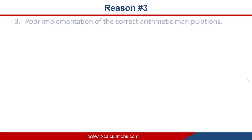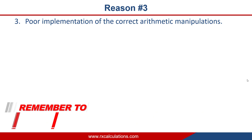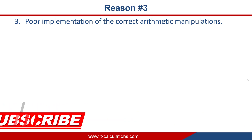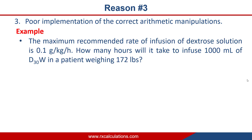Reason number three has to do with poor implementation of the correct arithmetic manipulation — errors from punching the wrong numbers in the calculator or setting up the solution incorrectly. As simple as it may look, it's actually one of the biggest contributors to why students get questions wrong. Let's illustrate this using the same example and spotlight the areas where you're likely to make an error.